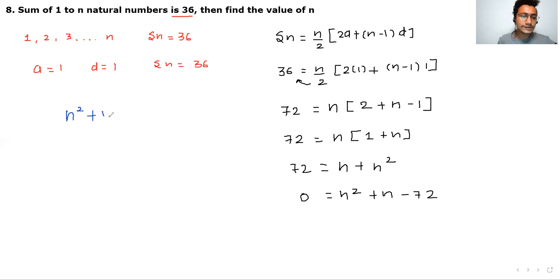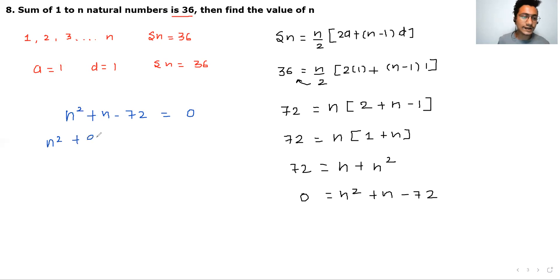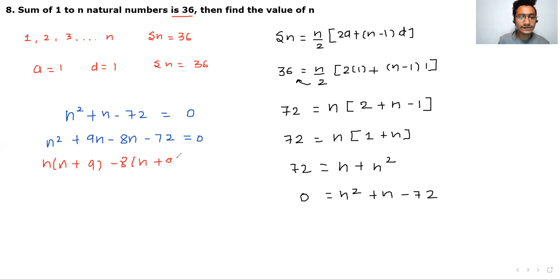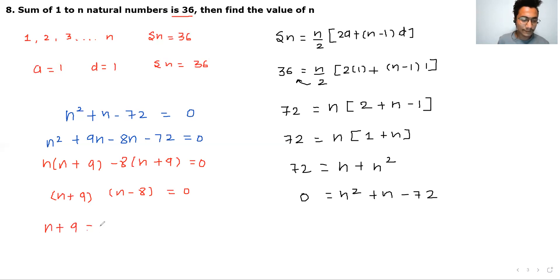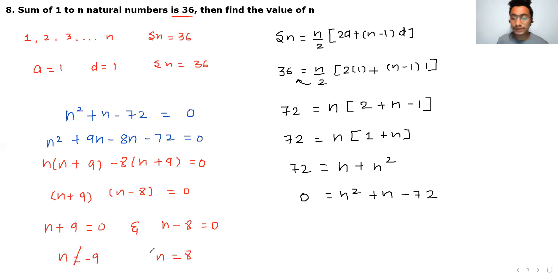The question converts to a quadratic equation: n squared plus n minus 72 equals 0. Factoring: n plus 9 times n minus 8 equals 0. So n plus 9 equals 0 giving n equals minus 9, or n minus 8 equals 0 giving n equals 8. Since n cannot be negative (natural number), n equals 8.